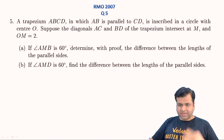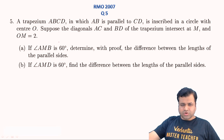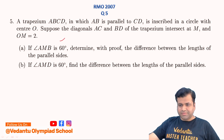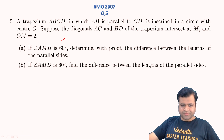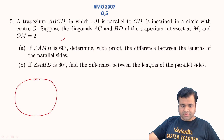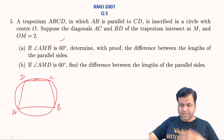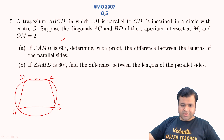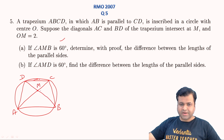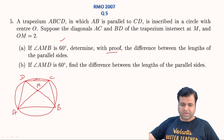Let's start the session. The geometric question of 2007 says: a trapezium ABCD in which AB is parallel to CD is inscribed in a circle with center O. The diagonals AC and BD intersect at M. If angle AMB is 60 degrees, determine with proof the difference between the lengths of the parallel sides — we need to find AB minus CD.